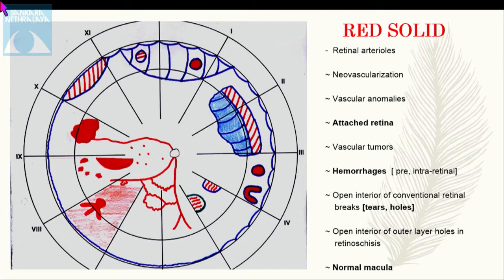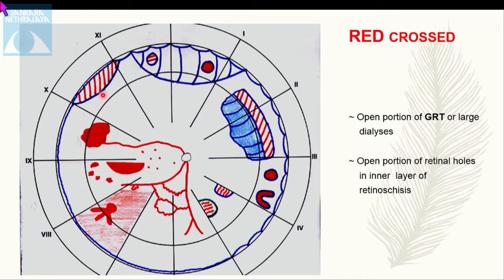Various color codings are used in fundus drawing. Red solid is used to document retinal arterioles, neovascularization, vascular anomalies, attached retina, vascular tumors like hemangiomas, hemorrhages, open interior of conventional retinal breaks, open interior of outer retinal holes in retinoschisis, and the normal macula. The red cross is used to document giant retinal tears (GRT) and the open portion of retinal holes in inner-layer retinoschisis.